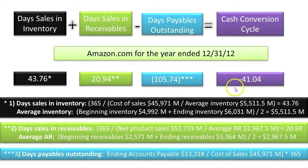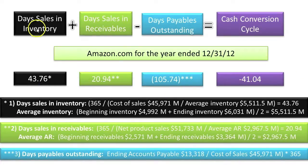Amazon's negative Cash Conversion Cycle effectively means that Amazon does not have to borrow any money to purchase inventory because it receives customer payments in advance of when it has to pay its suppliers. Amazon effectively funds all of its inventory purchases on the backs of its suppliers, who provide it interest-free credit for 105.74 days.